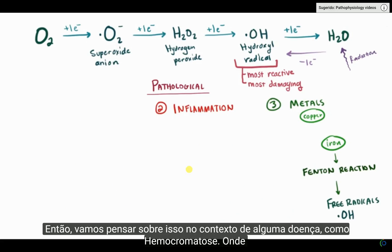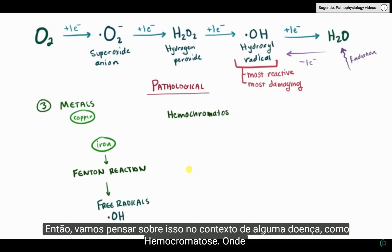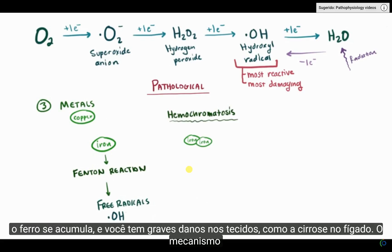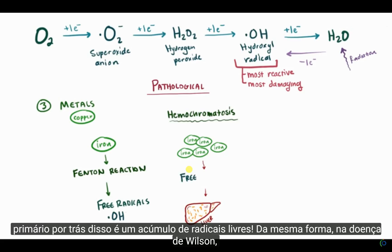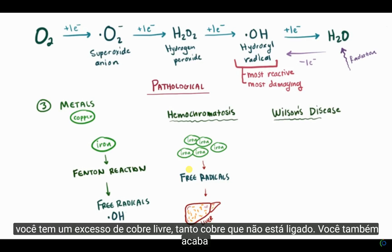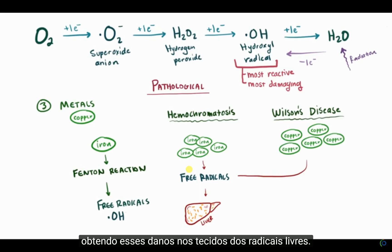Consider this in the context of a disease like hemochromatosis, where iron builds up and you get serious tissue damage like cirrhosis in the liver. The primary mechanism behind this is a buildup of free radicals. Similarly, in Wilson's disease there's an excess of free copper — copper that's not bound — and in the same way you end up getting tissue damage from free radicals.